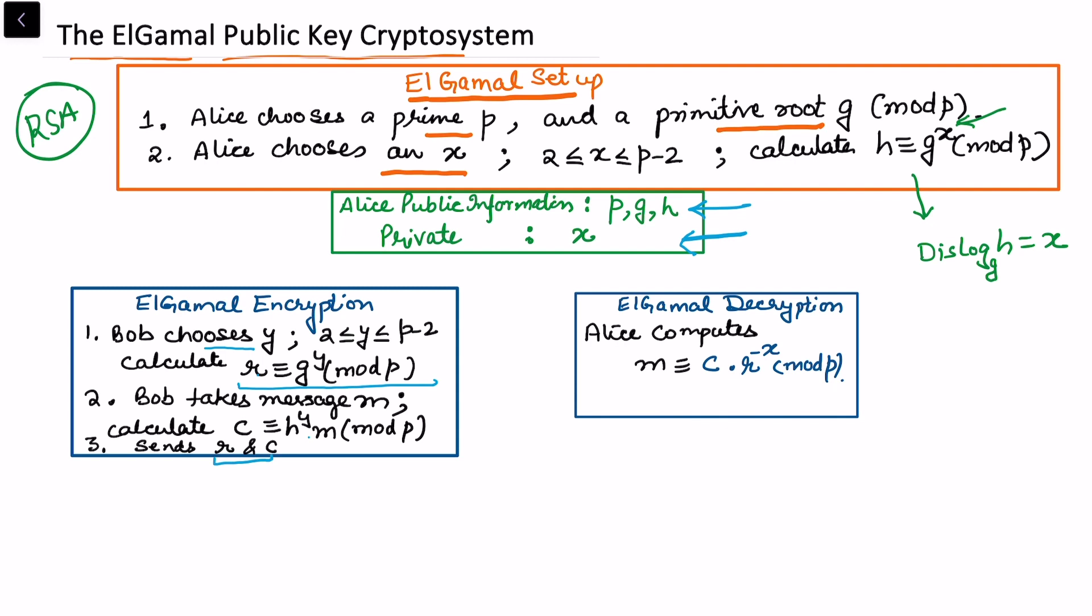So the first step is, why does this work? We'll simply see that this follows from the congruences. We have c * r^(-x) and I want to show that this is congruent to m mod p.